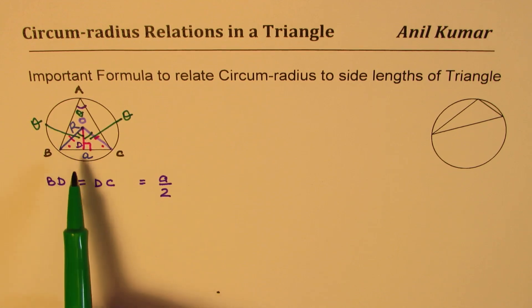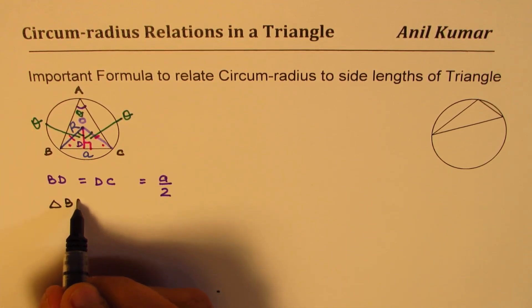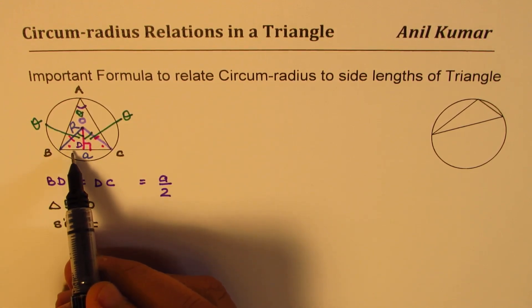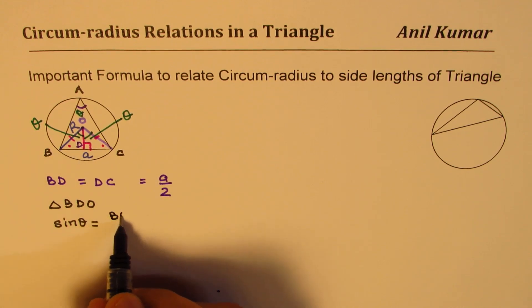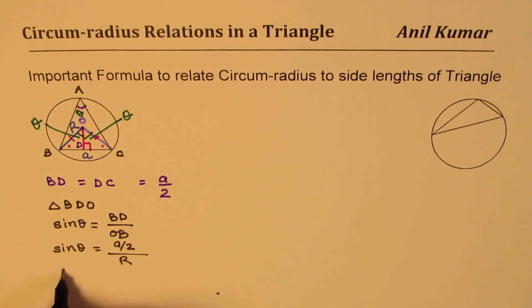Now we have a right triangle. If you look into the triangle BDO, what is sine theta equals to? Sine theta is opposite side over hypotenuse. The opposite side is BD and the hypotenuse is OB. From here, you can see that sine theta is basically equal to half times a, and OB is our capital R, the circum-radius. From here, we get radius is equal to a divided by 2 sine theta.